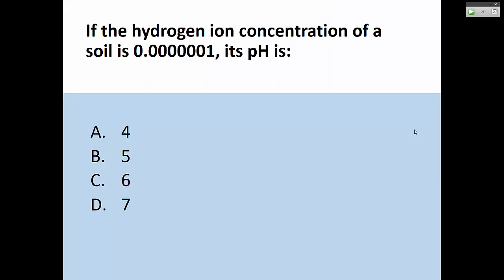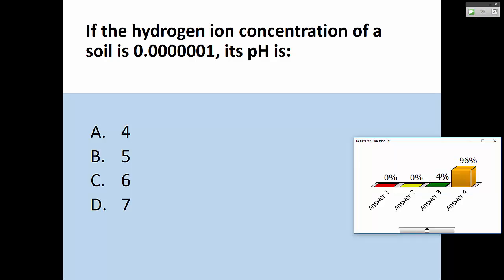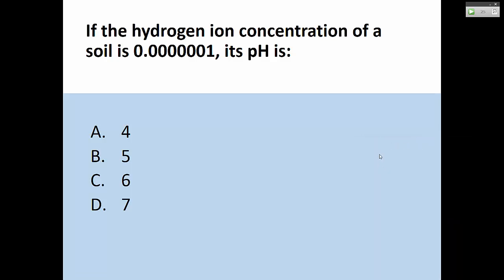Practice: if the hydrogen ion concentration of a soil is 0.0000001, its pH is 7 — you move the decimal 7 places to get home.